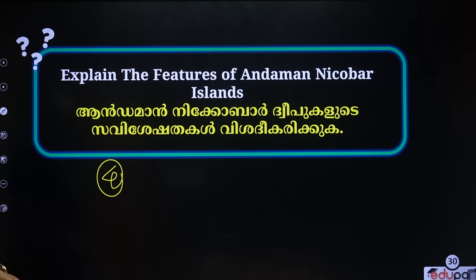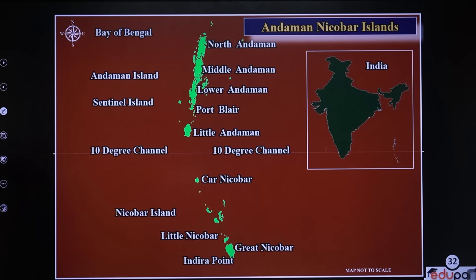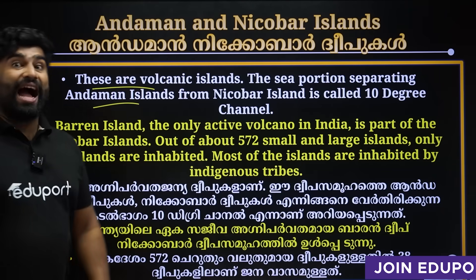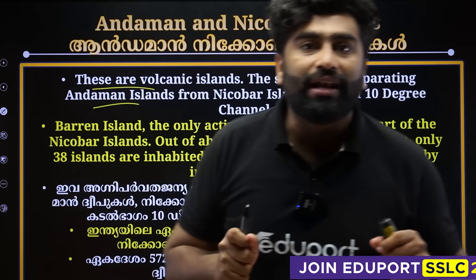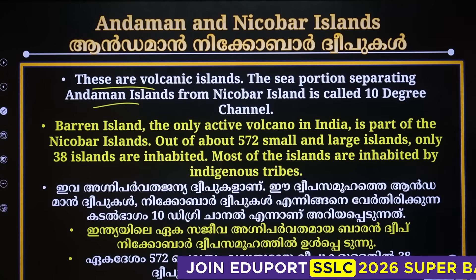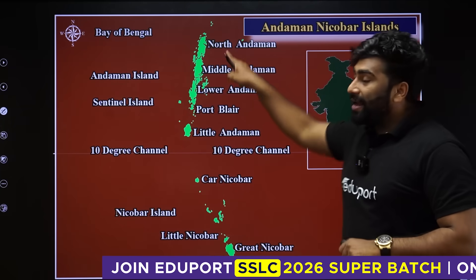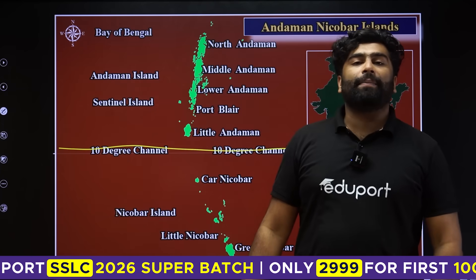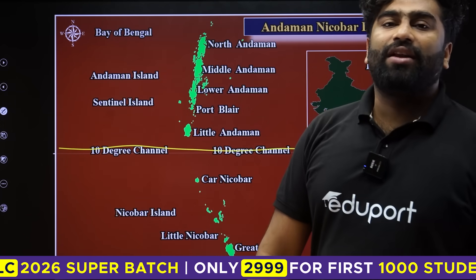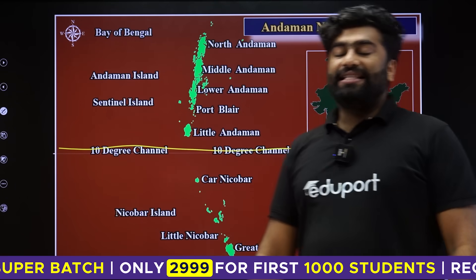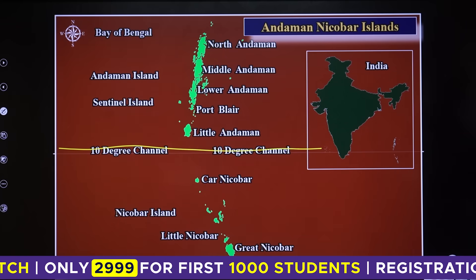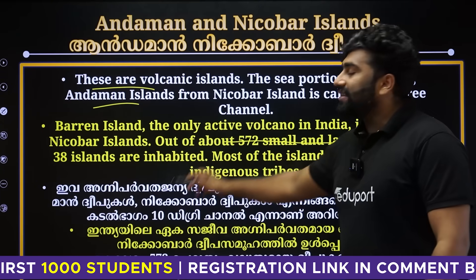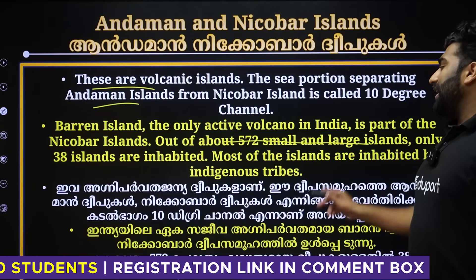The next question is about the Andaman and Nicobar Islands. These are volcanic islands. The islands are divided into North and South by the 10 degree channel. What is the 10 degree channel? It separates the two groups. There are about 570 islands in total, of which 38 are inhabited.